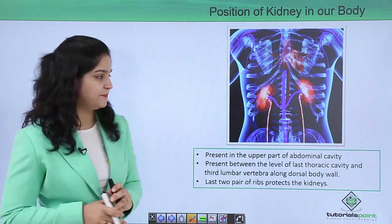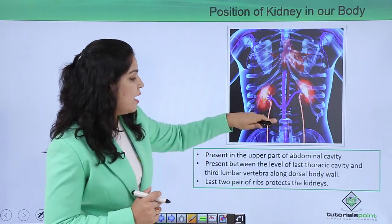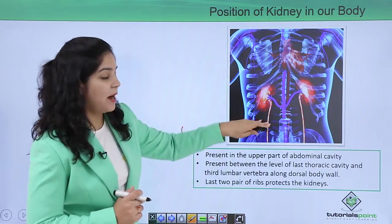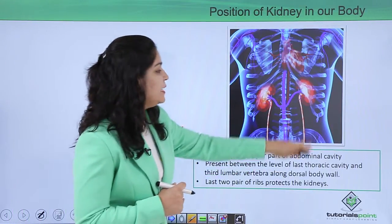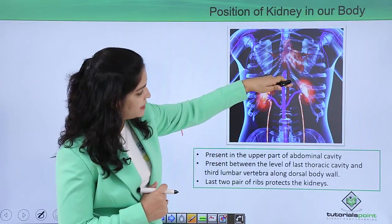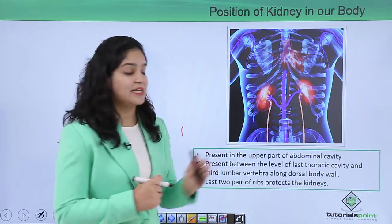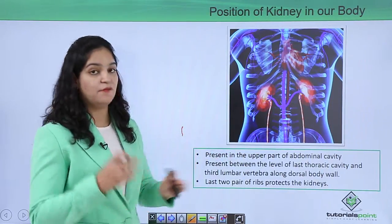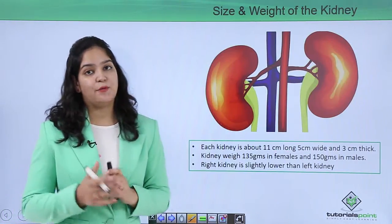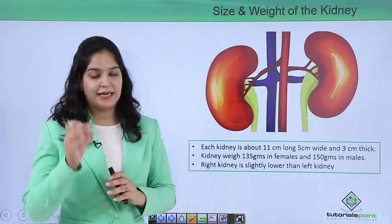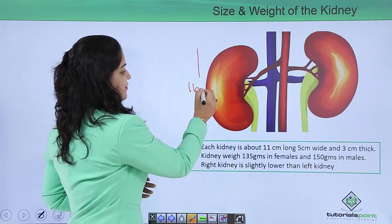These kidneys are present as a pair in the upper abdominal part of our body. They are positioned between the last thoracic cavity and the third lumbar vertebra. These kidneys are well protected between the last two ribs, which are called the floating ribs.